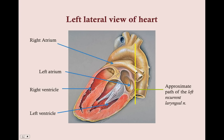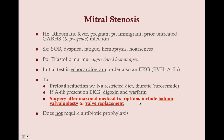Here's why we get hoarseness: in a left lateral view of the heart, the left recurrent laryngeal nerve comes off the vagus nerve and goes back up, passing behind the heart, between the pulmonary arteries and the aorta. Because it goes right behind the left atrium, if the left atrium gets dilated it can impede on the left recurrent laryngeal nerve and cause hoarseness.